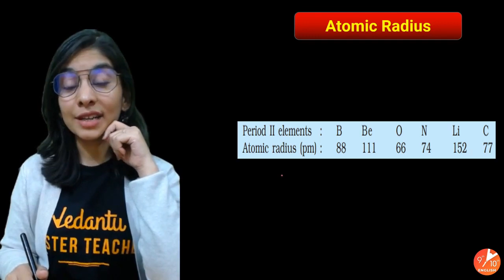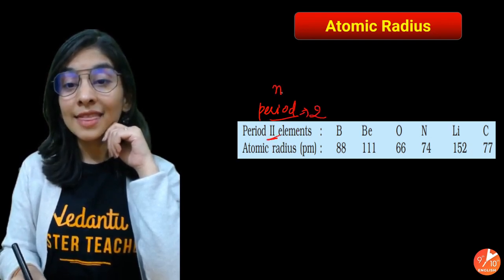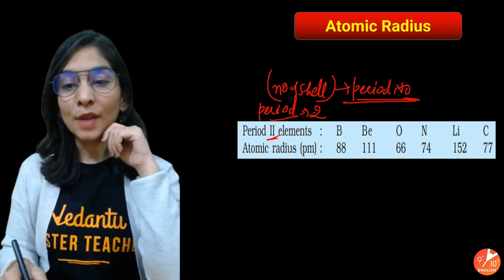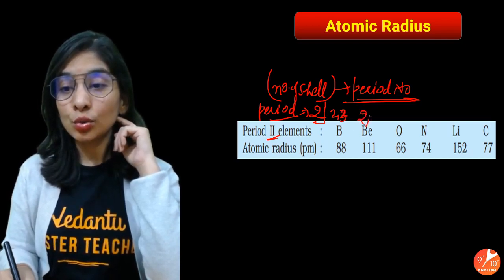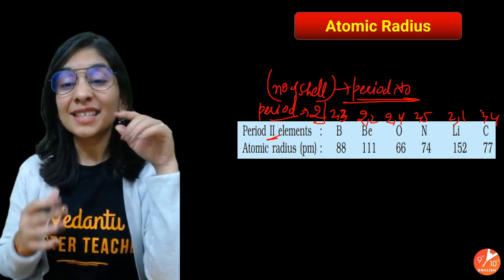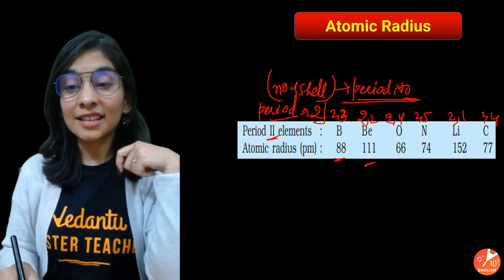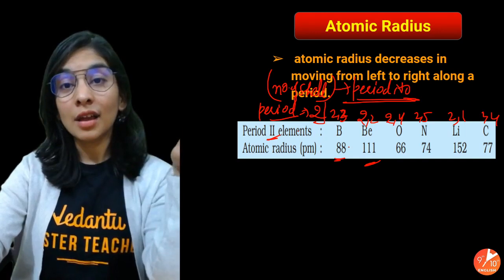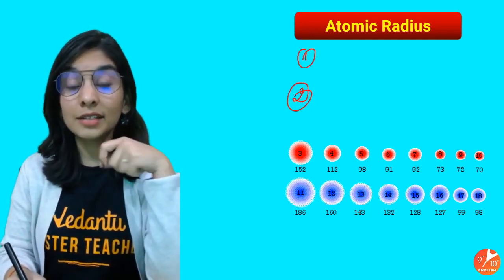Hydrogen has the minimum size at 37 picometers (1 picometer = 10⁻¹² meter). There are two factors on which atomic size depends: number of shells and nuclear charge. In a given period, all elements have the same number of shells. For example, all period 2 elements have 2 shells. The number of shells represents the period number. But their sizes differ, so the second factor — nuclear charge — is what matters within a period.